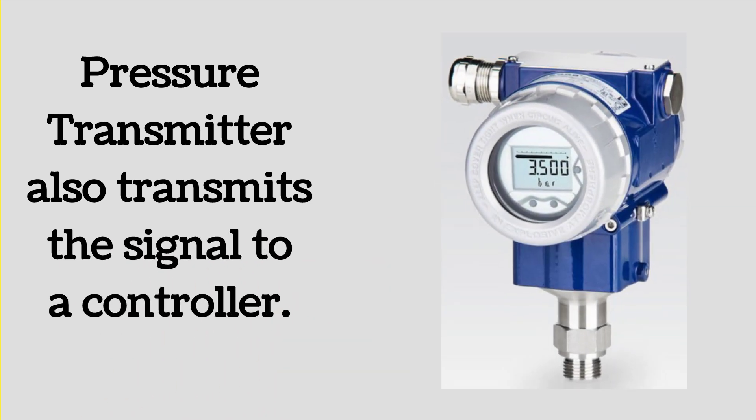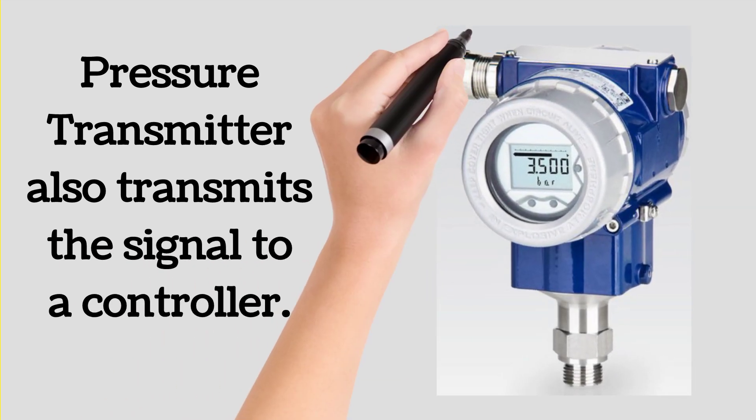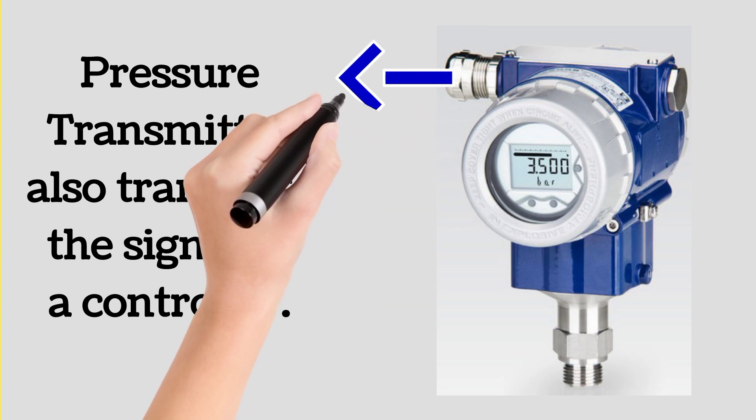Pressure transmitter also transmits the signal to a controller. This signal is transmitted by the port shown by the arrow.